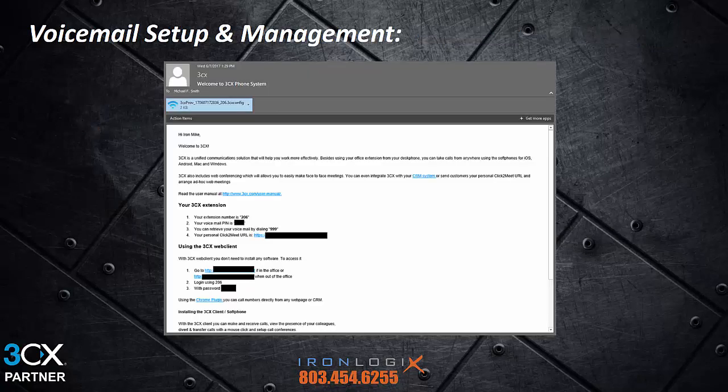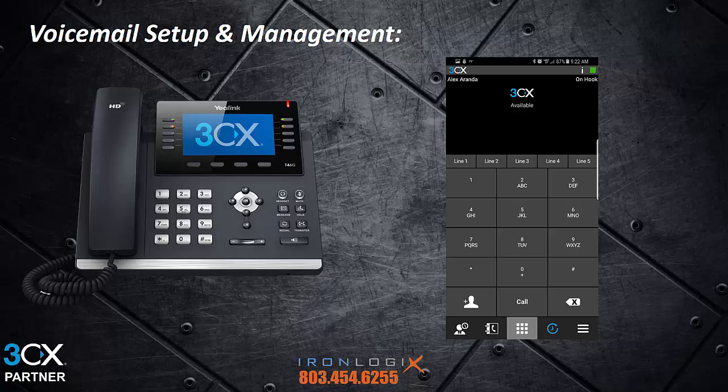You should have received a 3CX welcome email. It should look similar to this, minus all the black markouts. It has your extension and voicemail PIN, which is really what we need for this video. It also has web client credentials and other useful stuff, so if you don't have this email, get with your system administrator and have them send it to you, or at the very least give you what you need to continue on. For those of you who do not have a desk phone and are using the computer or smartphone app, this video assumes your extension is provisioned and you're connected and ready to go. If this is not the case, please pause the video and click the link to watch our Managing Mobile Call Flow video to get your app set up before you continue back here.